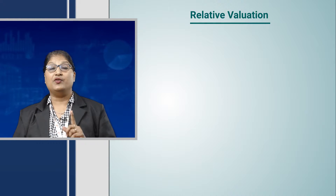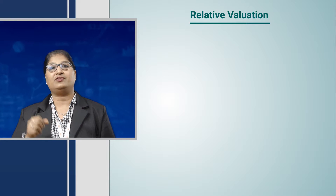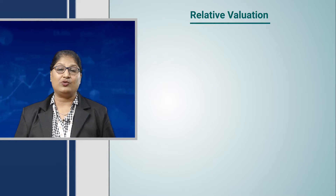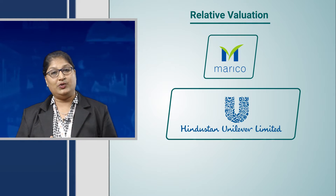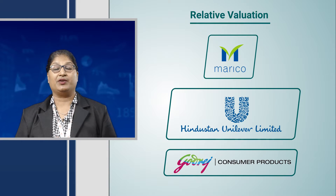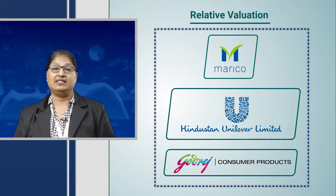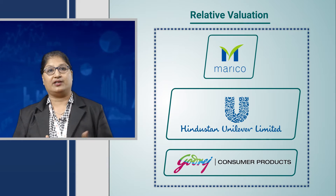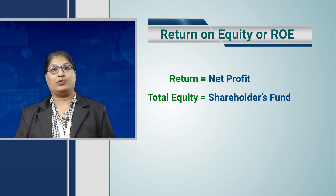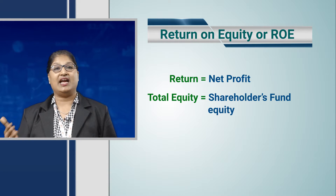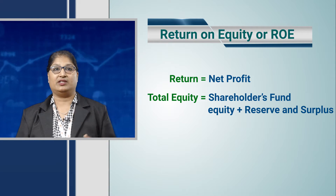So let's do a case study for three stocks under the same sector. We will do a relative valuation to understand which company among those three is a better return generator for the shareholders. We will analyze Marico, Hindustan Unilever, and Godrej Consumer — all in the FMCG segment — to understand which generates a high return on equity, where return means net profit and equity means total equity, owners' equity, reserves and surplus, or shareholders' funds.